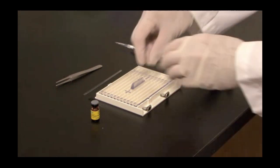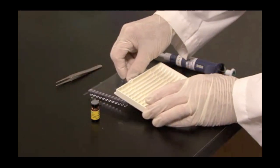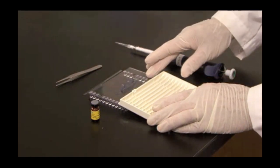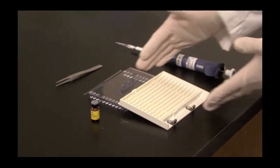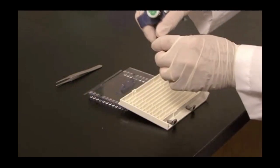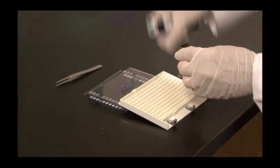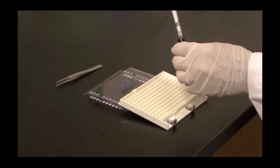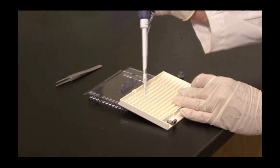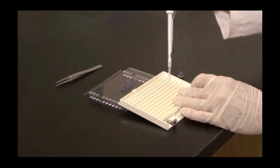Tilt the tray towards you to allow for even distribution of the strip. An easy way to do this is to take the focusing tray, put it on the edge of the lid to the focusing tray, and you have the tray at an angle towards you. Dispense sample along one edge of the lane of the tray.